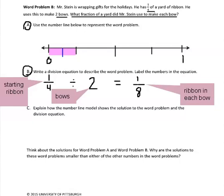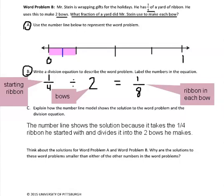Part C says to explain how the number line model shows the solution to the word problem and the division equation. The number line shows the solution because it takes the one-fourth ribbon he started with and divides it into the two bows he makes.